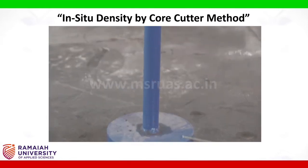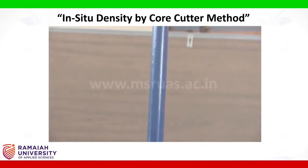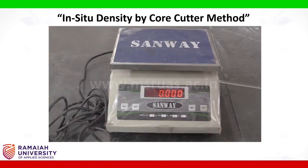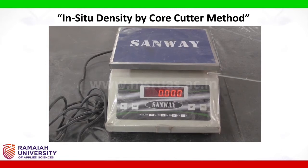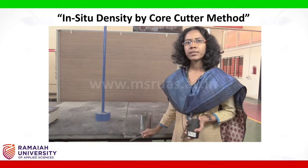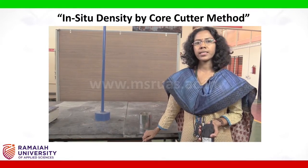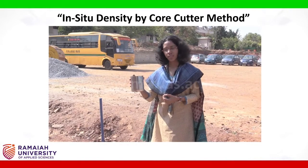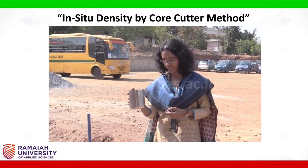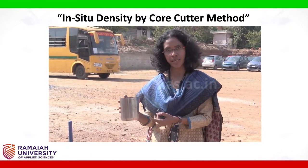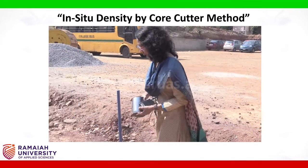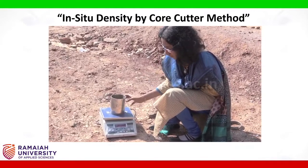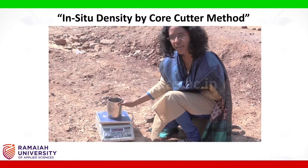A steel rammer is used for ramming the core cutter into the soil. A weighing balance is used to weigh the mold as well as the mold with the soil. The core cutter method of finding the density is usually conducted in the field, so we will go to the field and conduct the experiment. The core cutter has an internal diameter of around 10 cm and a height of 12.74 cm. Clean the core cutter and weigh it; the empty weight comes to around 0.882 kg.